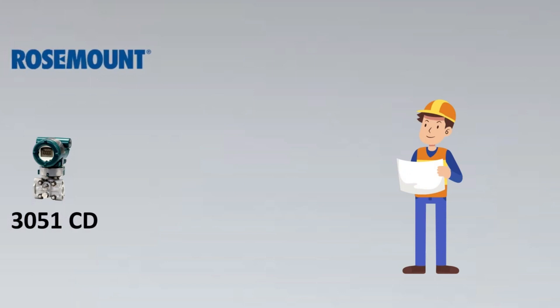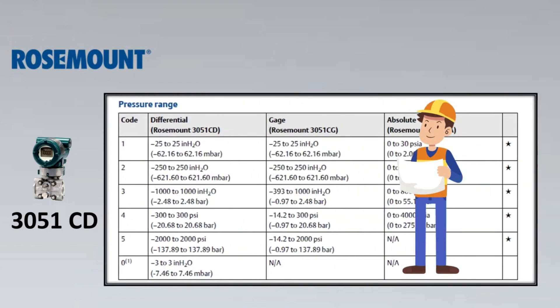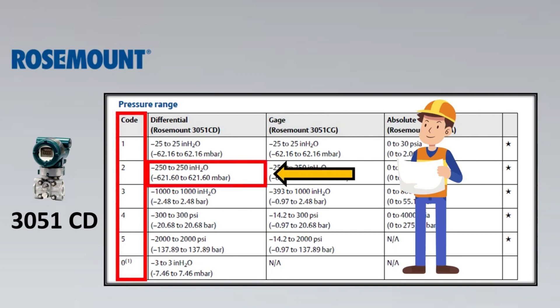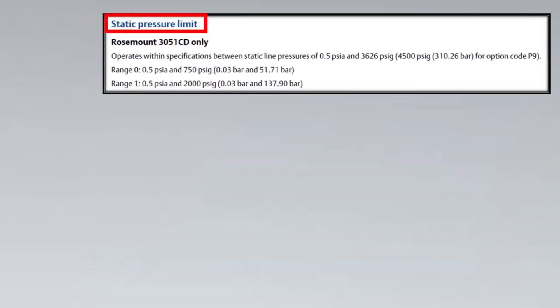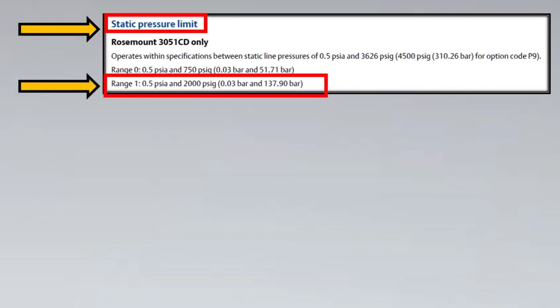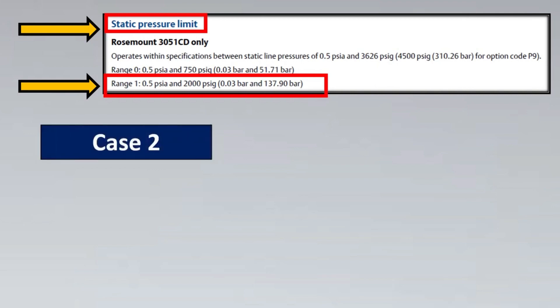Now, let's take the example of a very well-known transmitter, the Rosemount 3051CD. Other great transmitters like Yokogawa and Endress+Hauser follow the same philosophy. Looking at its catalog, there are various range codes — for a differential pressure Rosemount 3051CD, we can select any range depending upon the DP pressure range the process gives us. In the same catalog, you'll notice something called a static pressure limit.